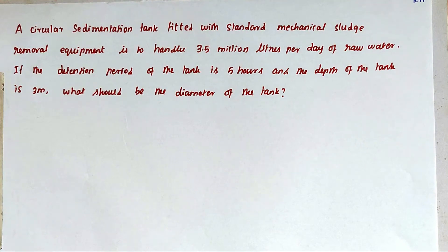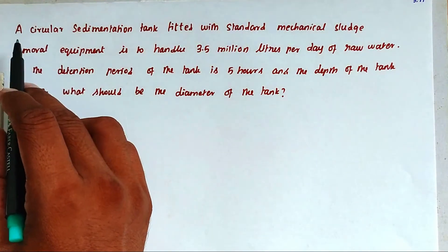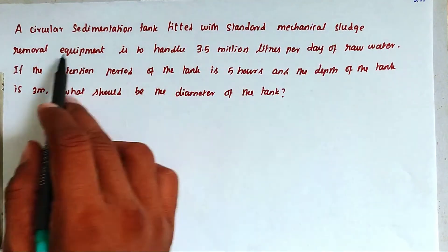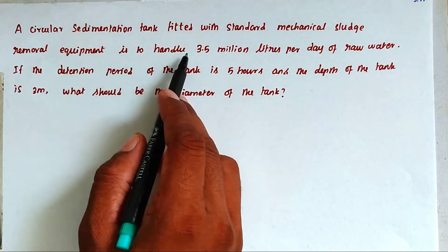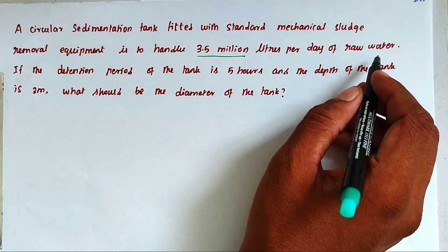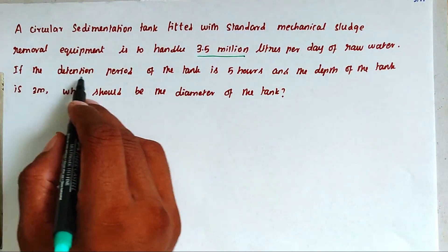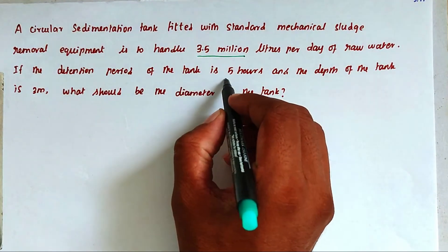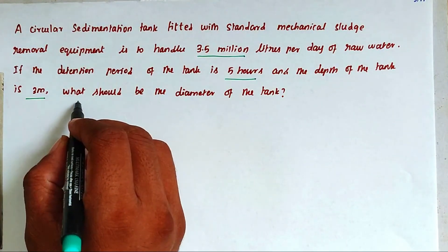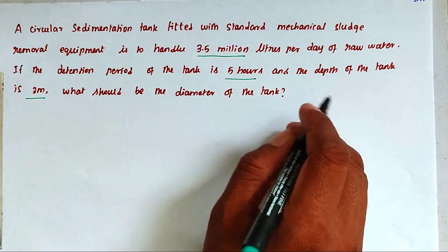Hello friends, welcome to civil engineering exam. Today we are going to see the problem related with environmental engineering in the topic of circular sedimentation tank. The problem is: a circular sedimentation tank fitted with standard mechanical sludge removal equipment is to handle 3.5 million liters per day of raw sewage. If the detention period of the tank is 5 hours and the depth of tank is 3 meter, what should be the diameter of the tank?